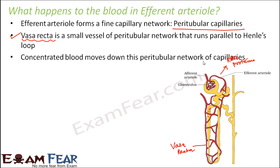Concentrated blood moves down through this peritubular network of capillaries. As the concentrated blood flows through this network, any remaining waste materials are sent into the filtrate through the epithelial cells of the tubules, and any useful materials present in the filtrate are sent back into the blood through the cells of the tubules. That is how the exchange takes place between the blood and the filtrate.